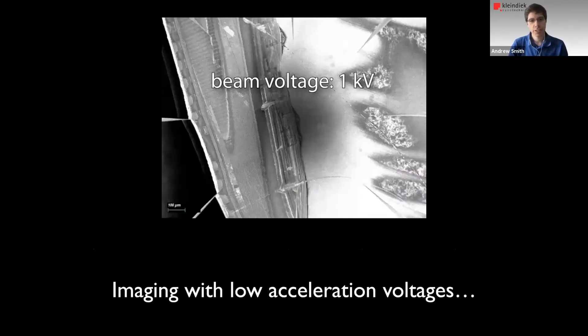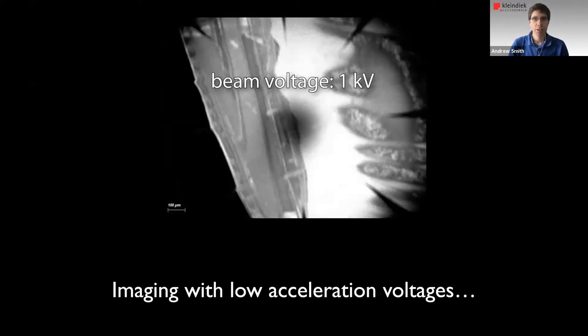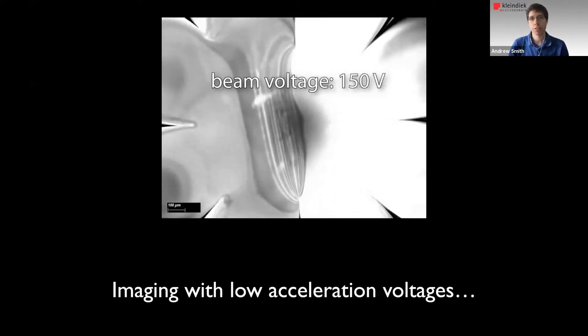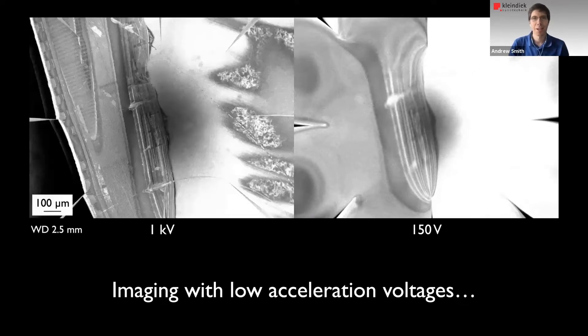Just touching on acceleration voltage one more time, this is a comparison between a 1 kV image, which you just saw there, and then switching to 150 volts. And you can see the image just goes to mush. So that just gives you a really plastic example of the challenge in getting good imaging at low-kV voltages.